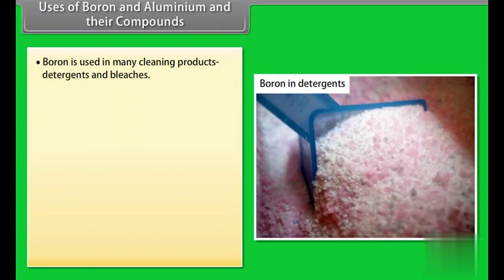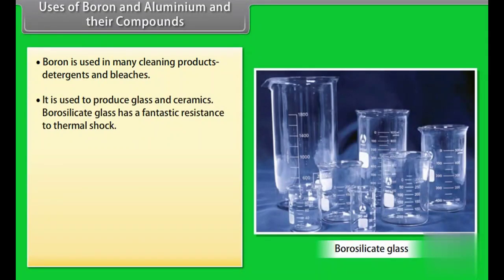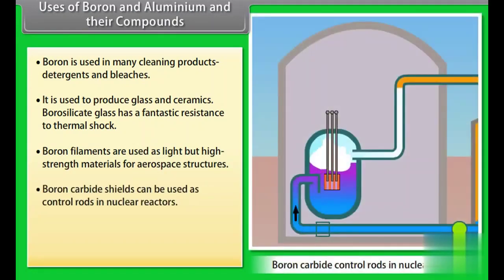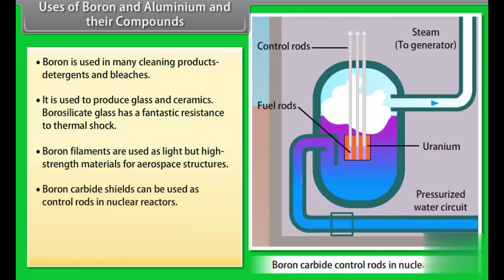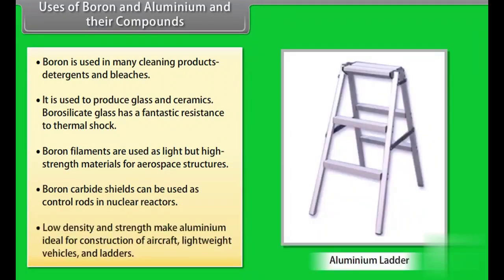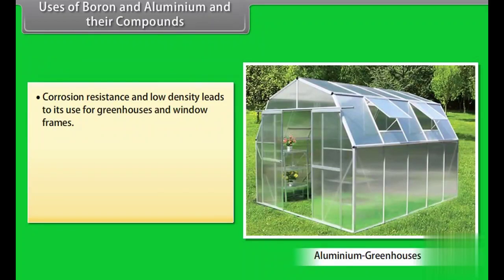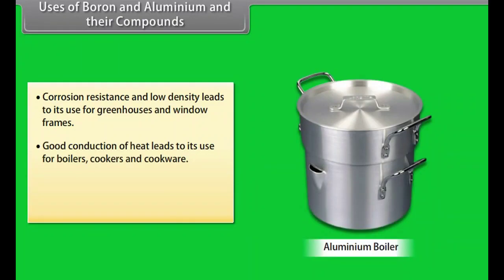Uses of boron and aluminium and their compounds. Boron is used in many cleaning products, detergents and bleaches. It is used to produce glass and ceramics. Borosilicate glass has a fantastic resistance to thermal shock. Boron filaments are used as light but high strength material for aerospace structure. Boron carbide shields can be used as control rods in nuclear reactors. Low density and strength make aluminium ideal for construction of aircraft, lightweight vehicles and ladders. Corrosion resistance and low density leads to its use for greenhouses and window frames. Good conduction of heat leads to its use for boilers, cookers and cookwares. Easy shaping make aluminium a good material for drink cans and roofing materials.